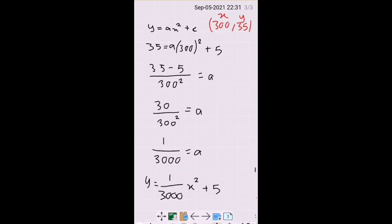So now we just calculate and we get 30 over 300 squared equals a and we use the calculator and we get 1 over 3000 equals a. Now we have the value of a, we just substitute this into this equation. And we have y equals 1 over 3000 x squared plus 5 and that is the answer.